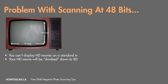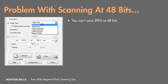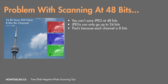Here's an analogy: if you try to play a 1080p movie on an old standard definition television, it won't be displayed at 1080p — it will be dumbed down to whatever resolution that TV is. Same with 48-bit scans. Our monitors and computers can only display at 24 bits, so even if you have a 48-bit scan, it will be dumbed down to 24 bits. The second problem is that you can't save JPEGs at 48 bits. Your scanner software won't give you the option because JPEGs have three channels limited to 8 bits — you can't go any higher.